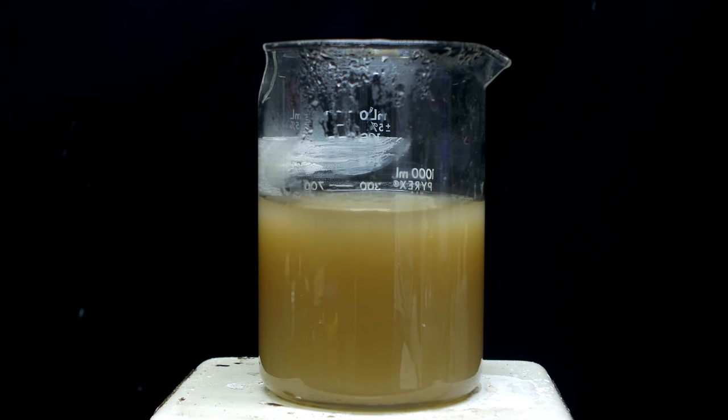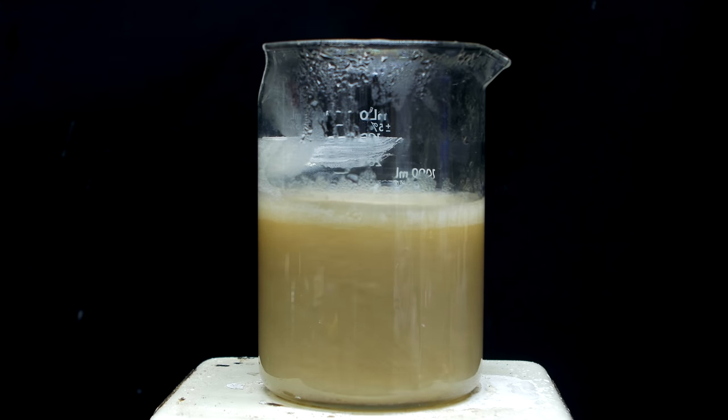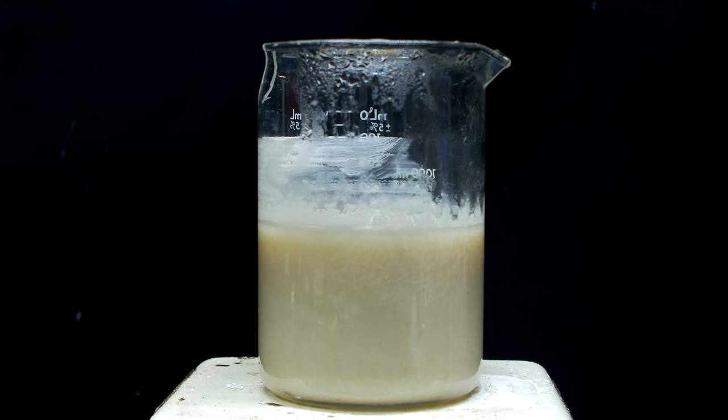As we keep boiling things down, you might notice a precipitate starting to appear. At some point, it will become very evident that there's a lot of white precipitate floating around. At this point, we're very close to being done, so you should monitor it carefully and don't take your eye off of it.